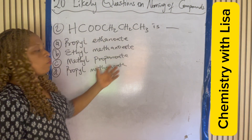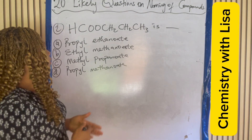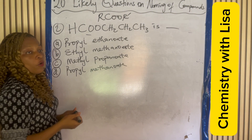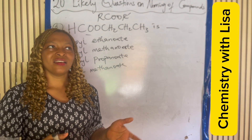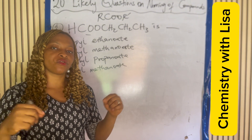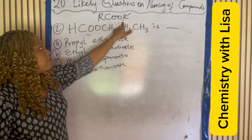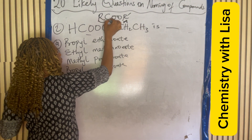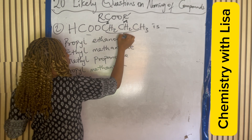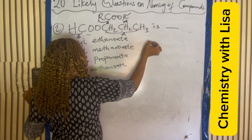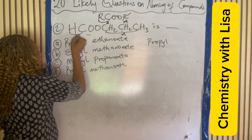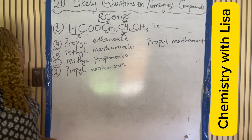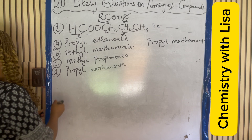The second question asks: what is this compound? First, identify the functional group — this is an ester. Please watch my video on naming organic compounds parts two or three; the links are in the description box. To name esters, you name the alkyl group first, then the acid part. This side has one, two, three carbons — that is 'propyl.' The other part has one carbon atom, which is 'methanoate.' So the answer is propyl methanoate.